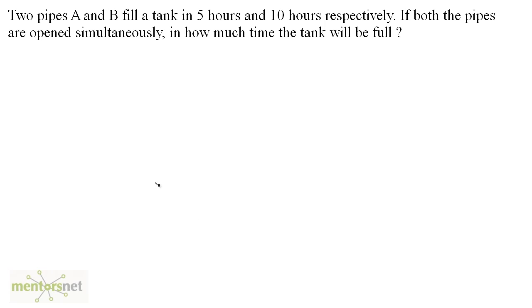Well there are two pipes which are filling in the tank and there is no pipe which is letting water out. So it is given that A fills the tank in 5 hours, that means the tank is completely full in 5 hours if only A is open. So I can calculate the part of the tank filled by A in 1 hour, which is equal to 1 by 5. And similarly the tank filled by B in 1 hour will be equal to 1 by 10.